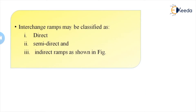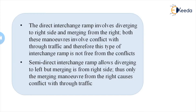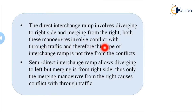We will study the classification of interchange. The interchange ramp may be classified as direct, semi-direct, and indirect ramps — this is the most important topic. The direct interchange ramp involves diverging to the right side and merging from the right side. Both these maneuvers involve conflict with the through traffic, and therefore this type of interchange ramp is not free from conflicts.